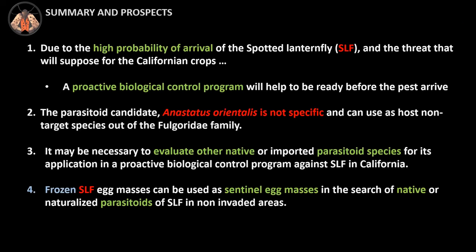In summary: due to the high probability of arrival of spotted lanternfly and the threat it poses to California crops, a proactive biological control program needs to be ready before the pest arrives. Second, the parasitoid candidate Anastatus orientalis is highly polyphagous and can use non-target species outside the Fulgoridae family, so it might be necessary to evaluate other native or imported parasitoid species. And one technique we will use this season is the deployment of frozen spotted lanternfly egg masses in search of native or naturalized parasitoids in non-invaded areas.